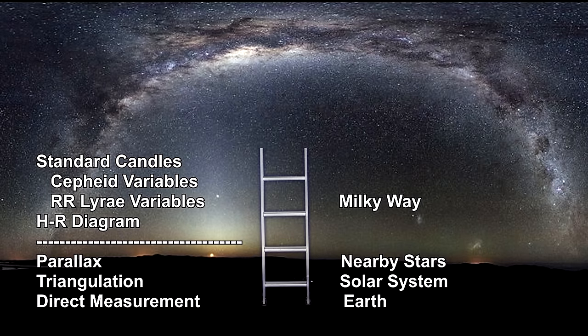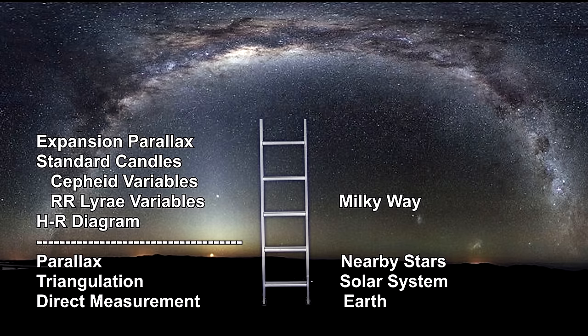In our segments on stars, we introduced a number of rungs for our cosmic distance ladder: stellar parallax, the HR diagram, and two standard candles — Cepheids and RR Lyrae. In this segment, we added expansion parallax. In our next segment, we'll add star clusters and supernovae.